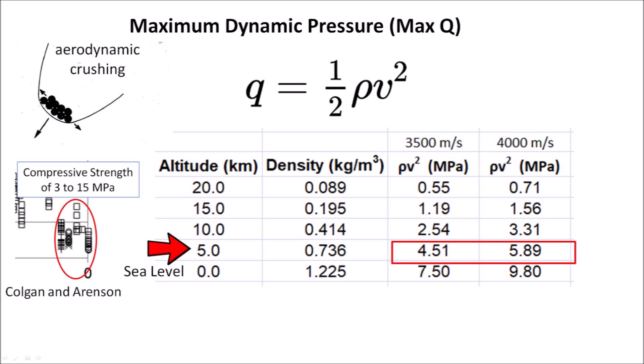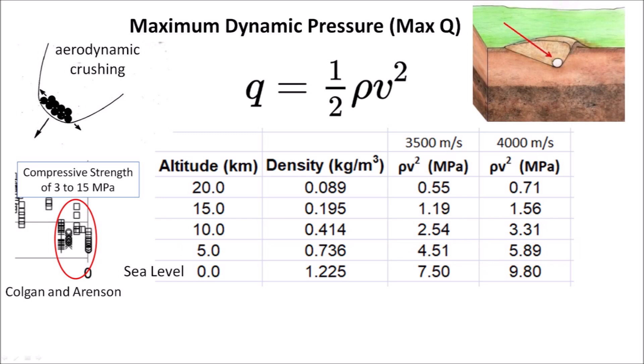As mentioned by Professor Melosh, a strike by a crushed but closely grouped collection of fragments would produce a single crater, although it could have an anomalous morphology. The fact that the ice impacts produce inclined conical cavities that transform into elliptical basins instead of fragmenting upon contacting the ground also provides evidence of the large compressive strength of the glacier ice boulders.